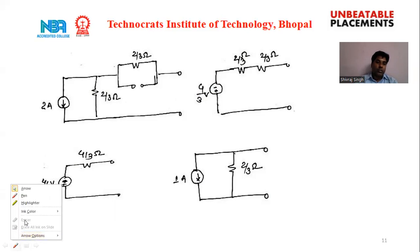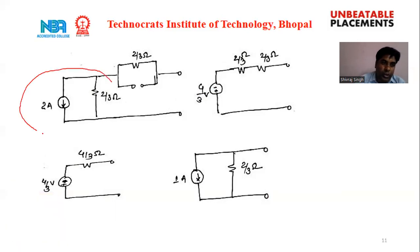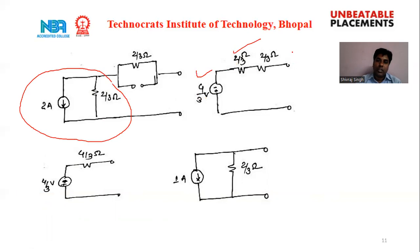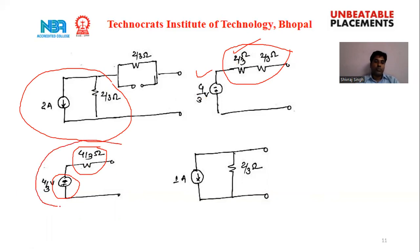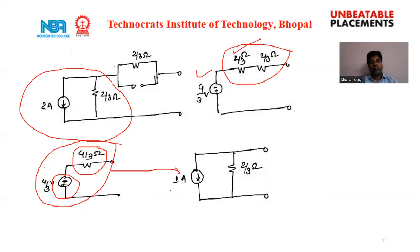The remaining parallel combination of current source and resistance is converted into a voltage source and series resistance. The series resistances are combined into a single resistance. Since the question asks for only a current source, this voltage source and resistance are converted back into a current source, giving 4/3 divided by 4/3, which equals 1 ampere with a parallel resistance.